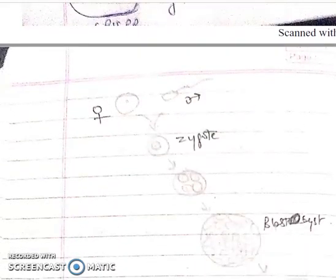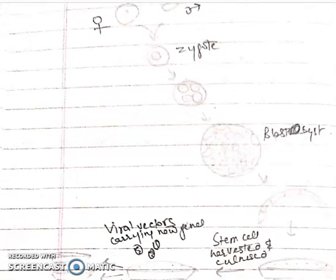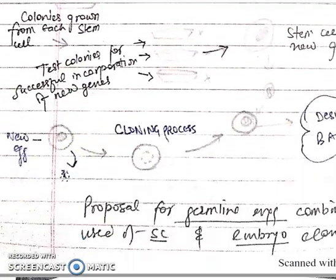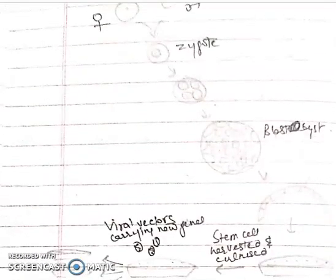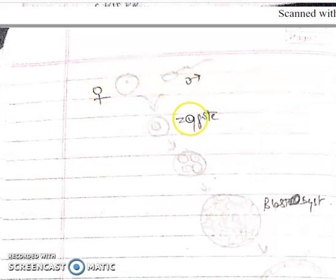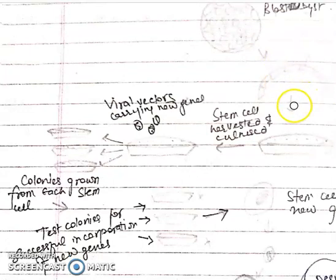This diagram shows the schematic presentation of germline engineering that combines the use of somatic cloning and embryo cloning. It starts with the sperm and ova that fuse to form zygote, then embryo is formed. At the blastocyst stage, it is cut open and stem cells are harvested and cultured.